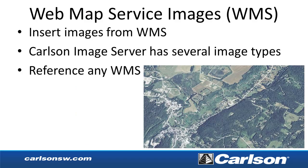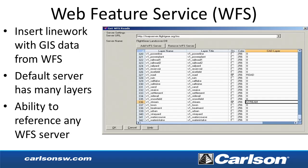In Carlson GIS, there is a new Web Map Service (WMS) images command to insert images into the drawing from WMS servers. A Carlson image server setup has several public image servers already configured, and you can also type in your own server address. Available services include aerial photographs. There's also WFS (Web Feature Services) for inserting line work with GIS data, with a default server that includes layers like streams and roads.